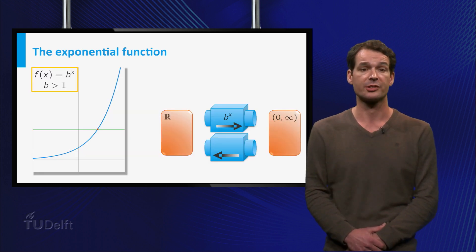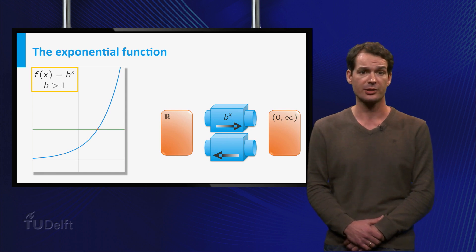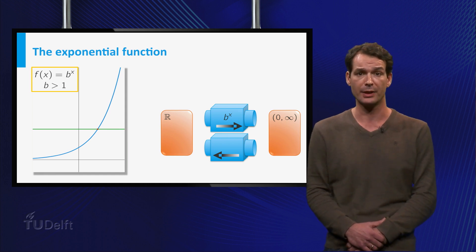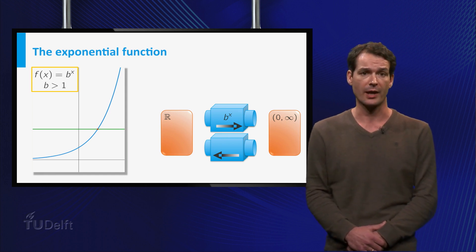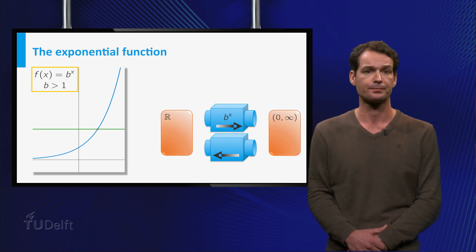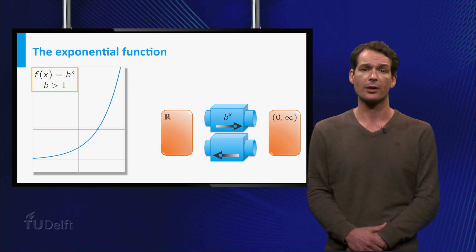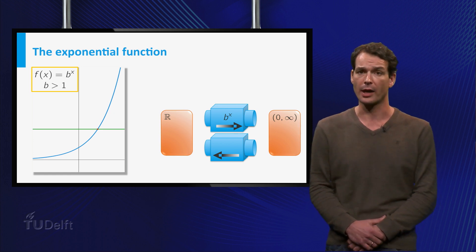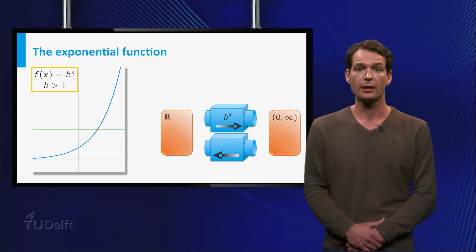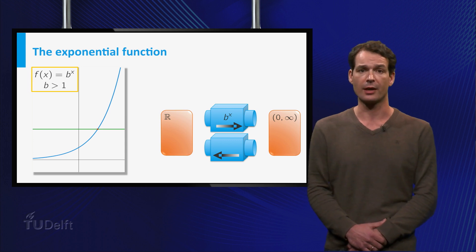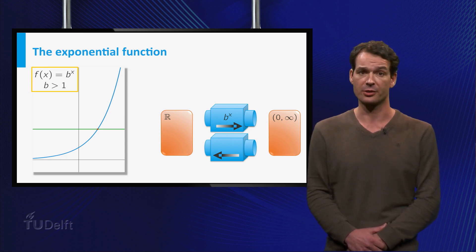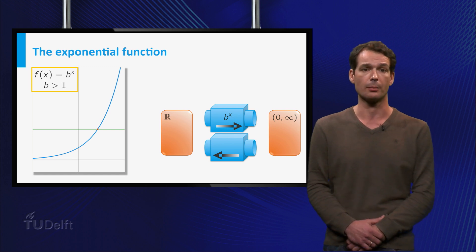Let's consider a more general setting. We look at the exponential function with base b larger than 1, so f of x is b to the power x. The function b to the power x is defined for any x, so the domain of f is the whole real line.